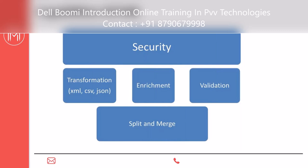In Mule, scatter-gather is used for split and merge. In Dell Boomi, the Data Process shape is used for splitting and merging. Security is also provided internally - API key security, API controller security - to secure applications before interacting with third-party or external systems.